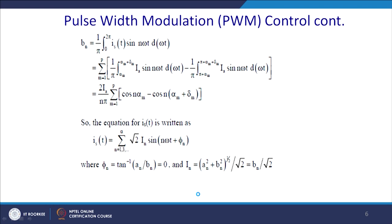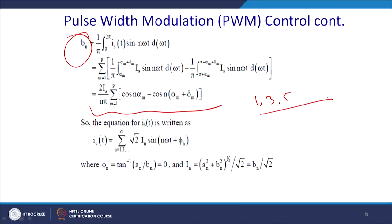The value of bn is calculated as (1/π)∫₀²π sin(ωt) dt summed over P pulses, giving bn = (2·Ia)/(n·π) × Σ from m=1 to P of cos(n·alpha_m). By choosing alpha appropriately, bn can be made zero — one triggering angle eliminates one harmonic. With odd harmonics present (1st, 3rd, 5th...), choosing alpha to make b3 = 0 achieves selective harmonic elimination.